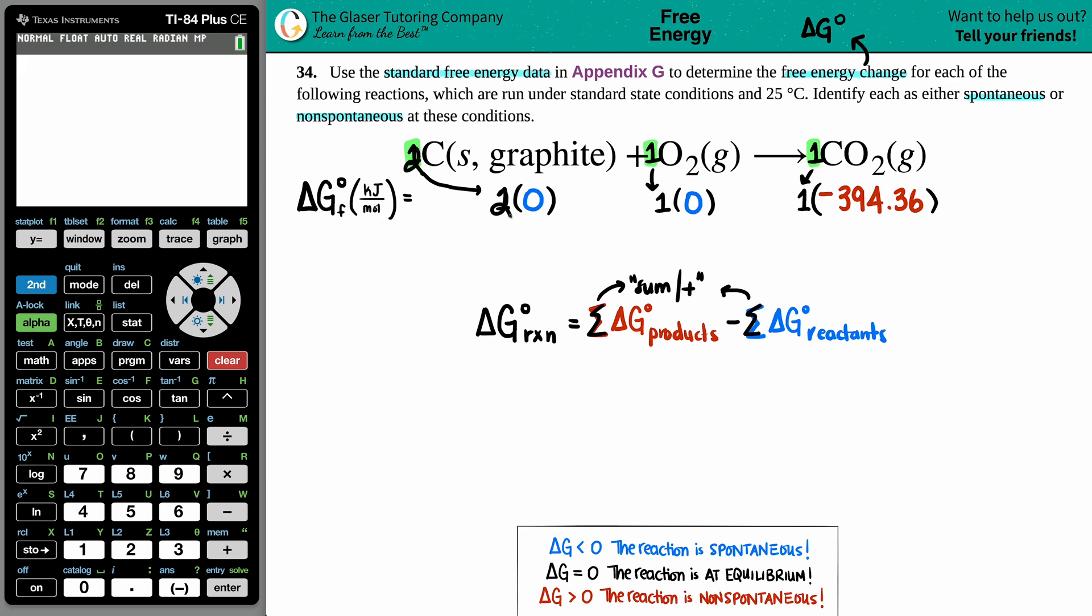We still need to sum up the sides. Literally in the balanced equation, it was carbon plus O₂, so it's this number plus the other number. But zero plus zero is just zero. And one times -394.36 is -394.36. Now we have our values to plug in for our equation.